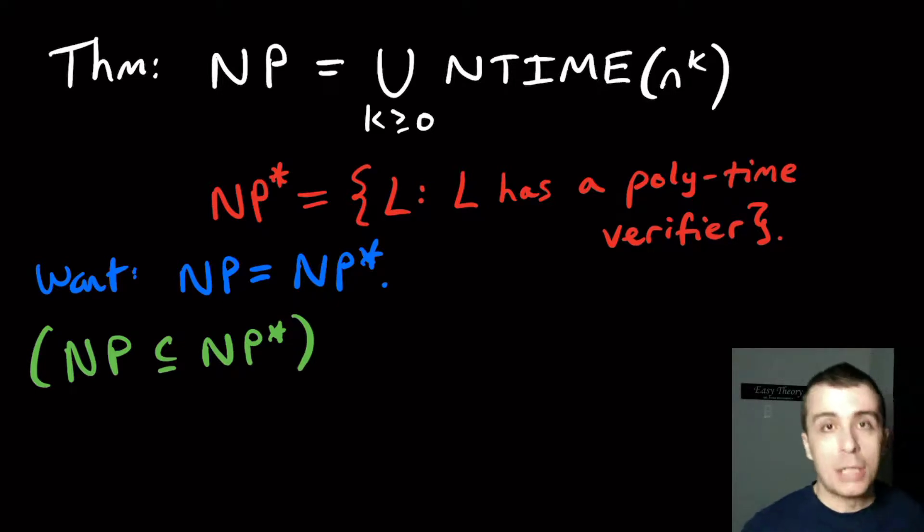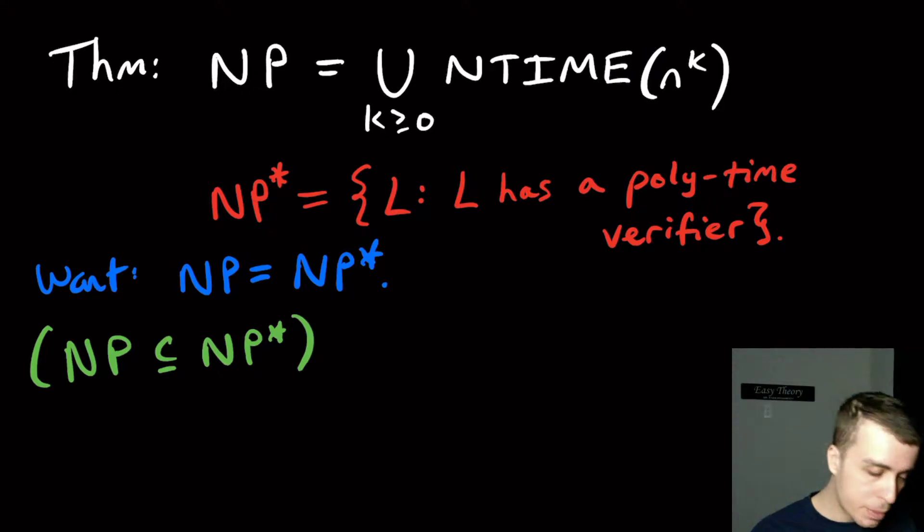But we also talked about these verifiers last time, which are these machines that will not only take an input W, but also a certificate, which is essentially like the proof or some helper string to figure out whether that input W is in the language or not. So I'm going to call that language NP star. And I claim that these two sets are the same.